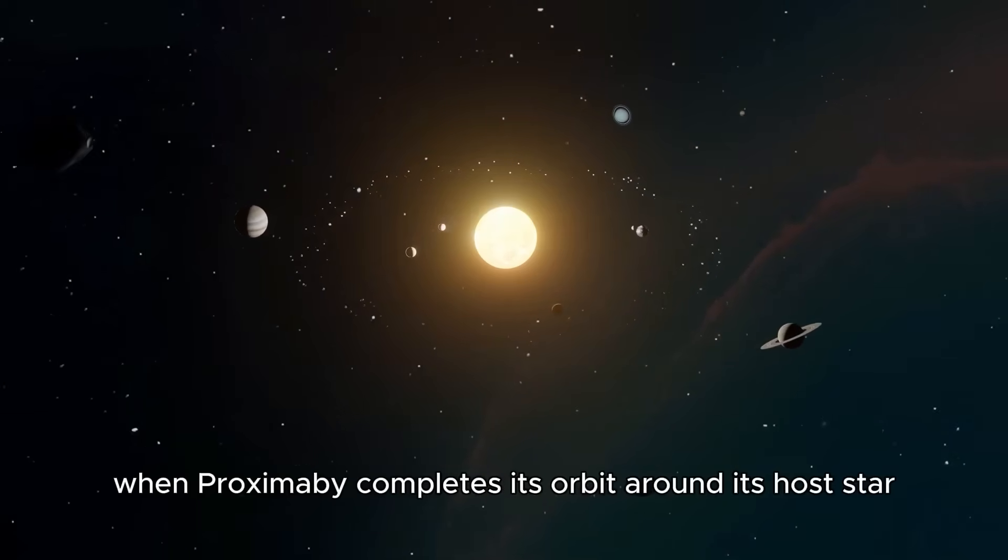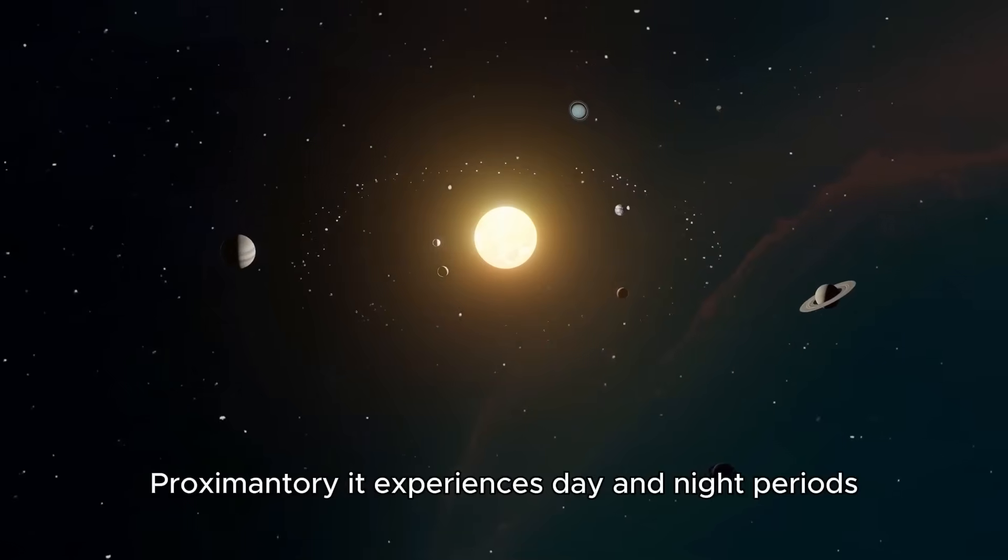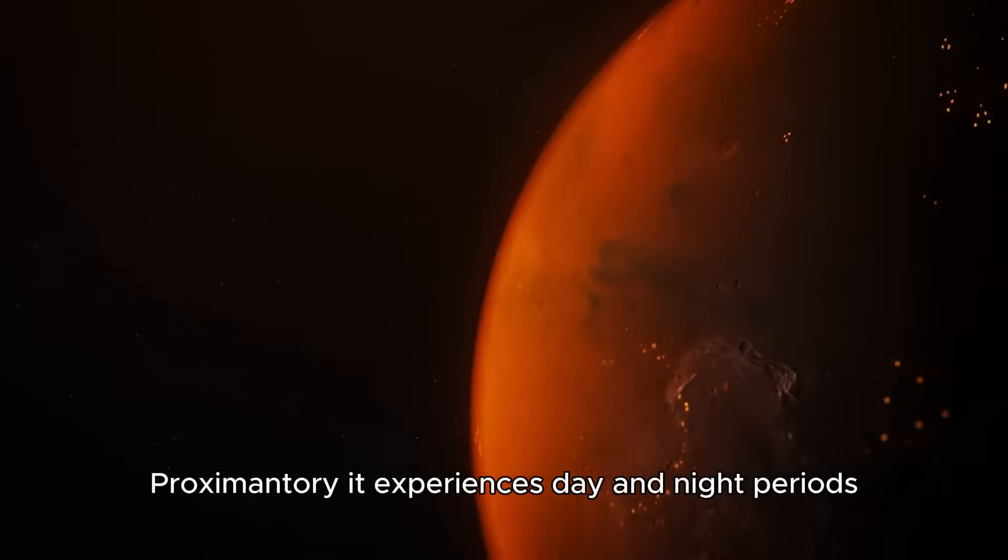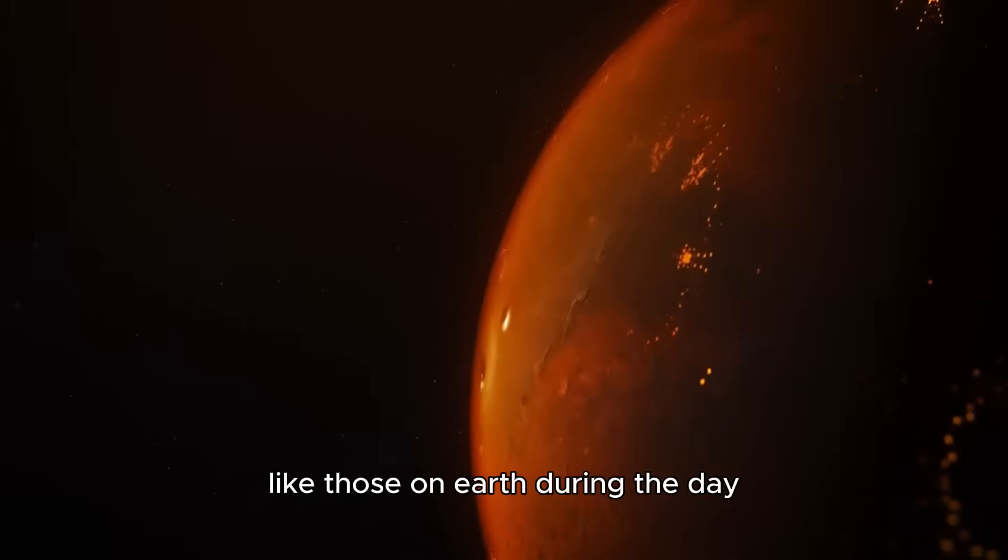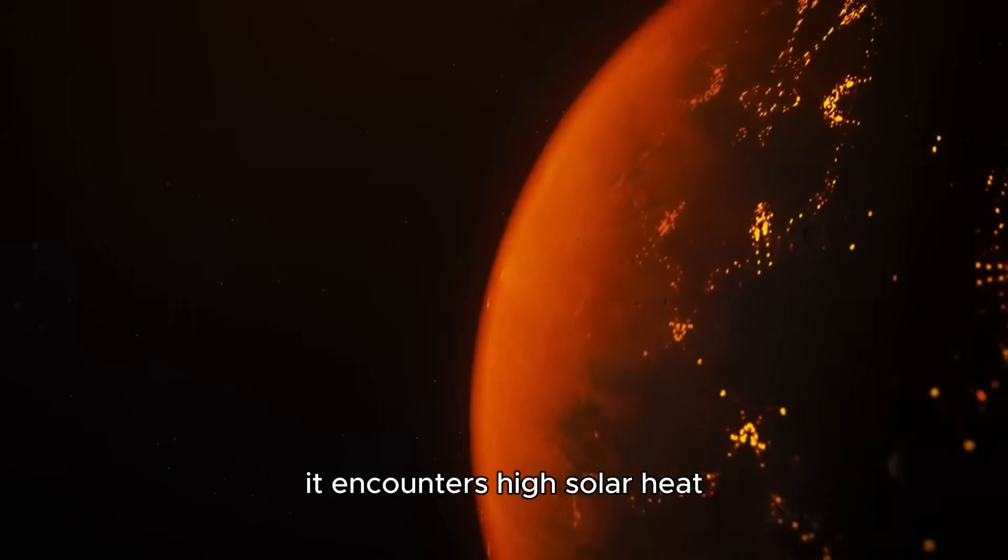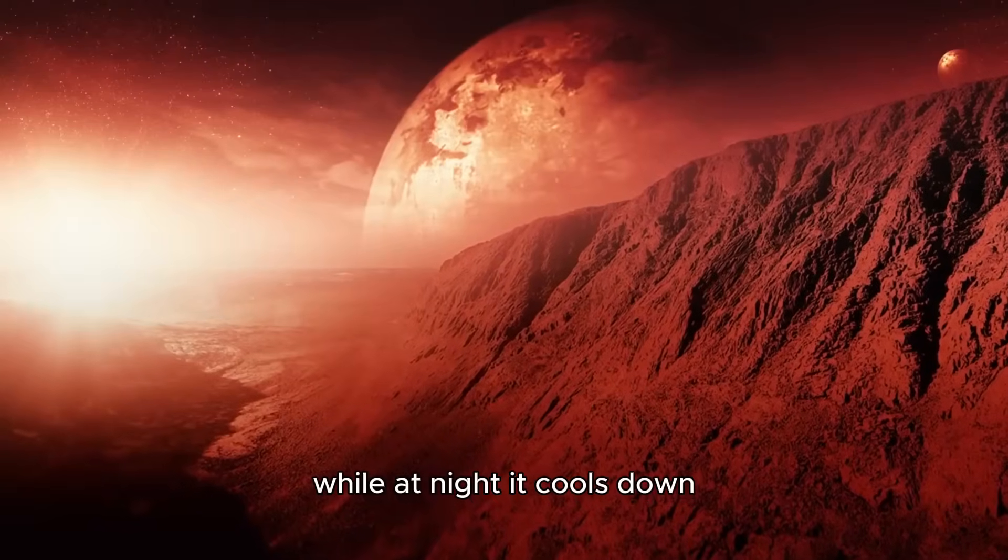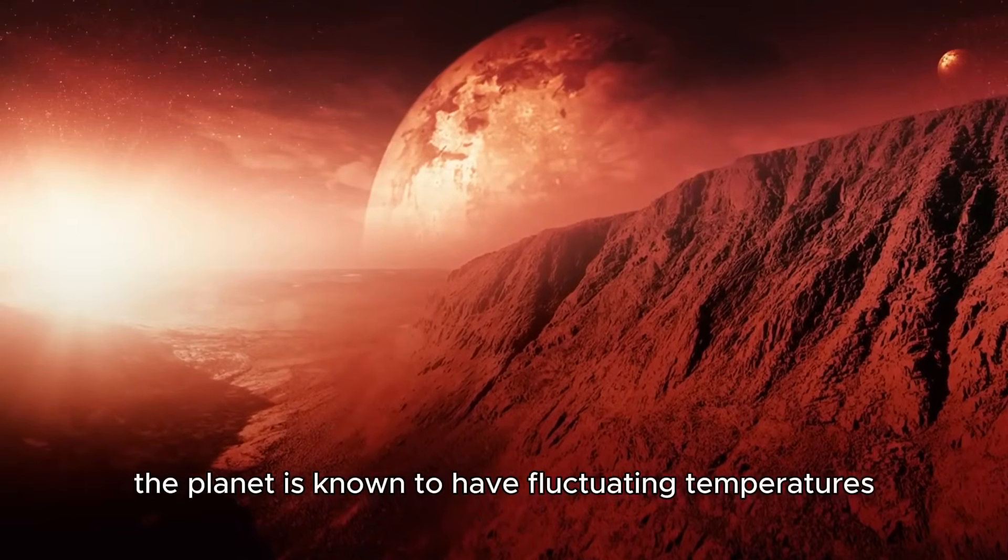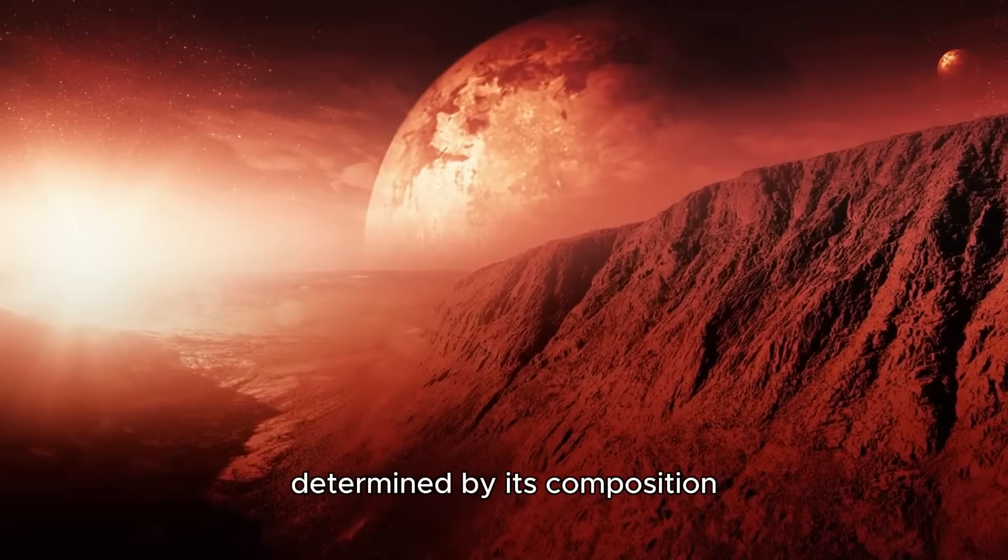When Proxima B completes its orbit around its host star Proxima Centauri, it experiences day and night periods like those on Earth. During the day, it encounters high solar heat, while at night it cools down. The planet is known to have fluctuating temperatures determined by its composition.